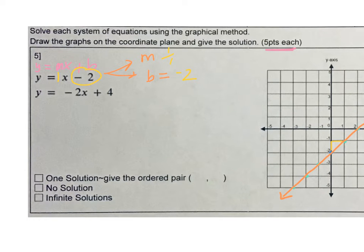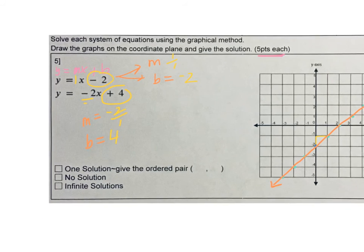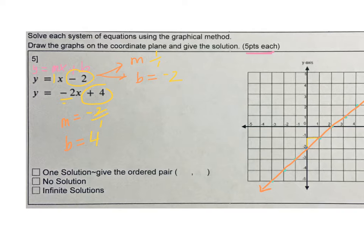Y equals MX plus B — let's look at our second equation. Let's pull out our M and B. Begin at the B, which is 4. Our slope is negative 2; we need rise over run, so that's negative 2 over 1. Begin at positive 4 and put a point. Since our slope is negative, the line decreases. We rise down 2, forward 1, put another point — and there's our spot where they intersect. That's our solution.